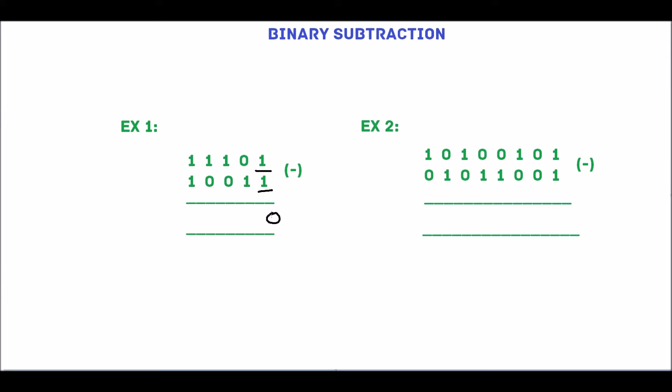0 is smaller than 1, so take borrow from the next two digits. In binary number system, the base is 2, so the borrow value is 2. 2 minus 1 is 1.